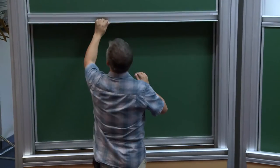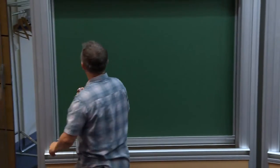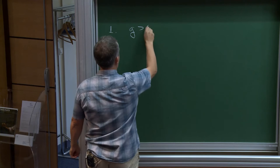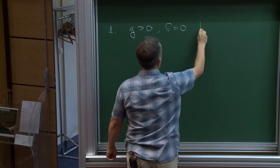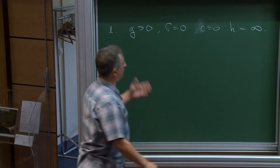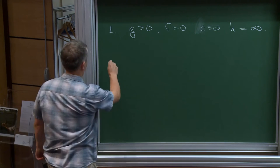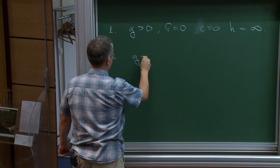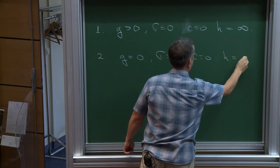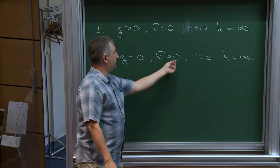In terms of these four parameters, let me remind you of the four problems we were looking at. The first problem: gravity greater than zero, surface tension equal to zero, depth infinite — these are pure gravity waves in infinite depth. The second problem: gravity equal to zero, sigma greater than zero, c equal to zero, h infinite — these are capillary waves of infinite depth, waves driven by surface tension.